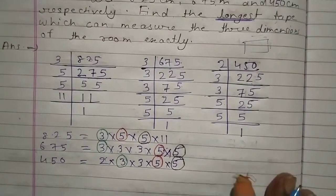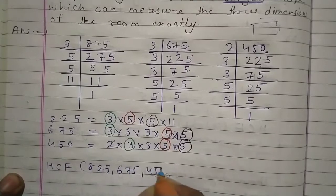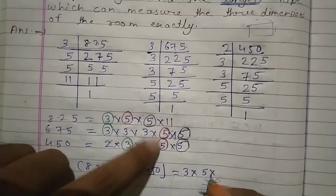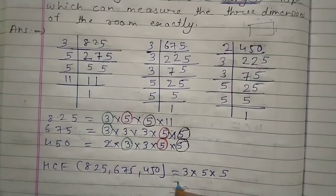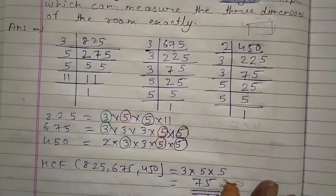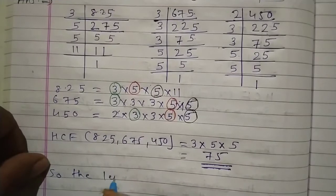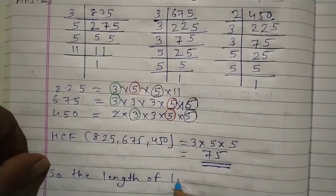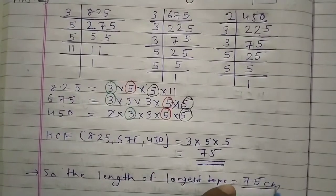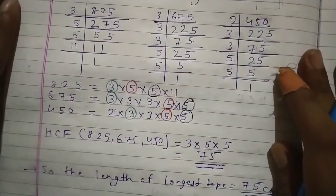HCF of 825, 675, and 450 is equal to: green pen से round किया 3, red pen वाला 5, और black pen वाला 5 — एक बार each write करो। HCF = 3 × 5 × 5 = 75. यही हमारा longest tape की length है। So the length of the longest tape is equal to 75 cm. इस तरह Question No. 3 complete होता है।